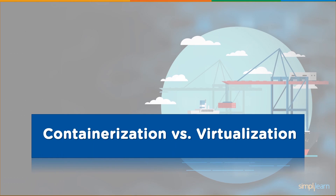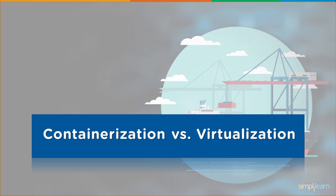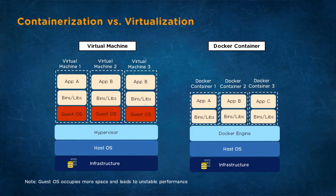Containerization and virtualization are two different ways to deploy applications and microservices. In VMs, a hypervisor is a firmware layer that enables multiple operating systems to run side by side. A virtual machine has unstable performance as multiple running VMs run simultaneously on the same machine, and the efficiency of hypervisors is not as good as that of the host operating system.